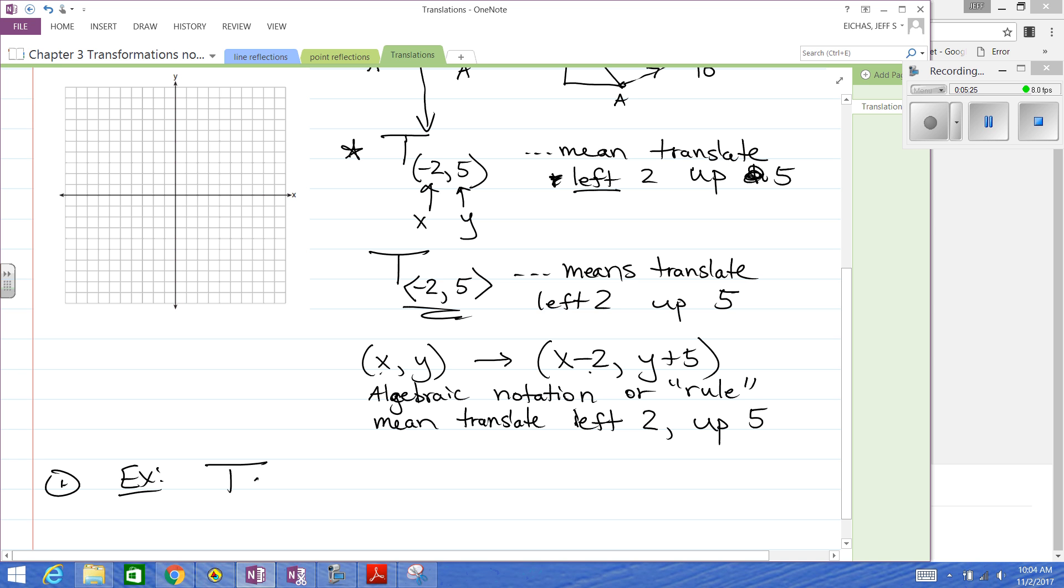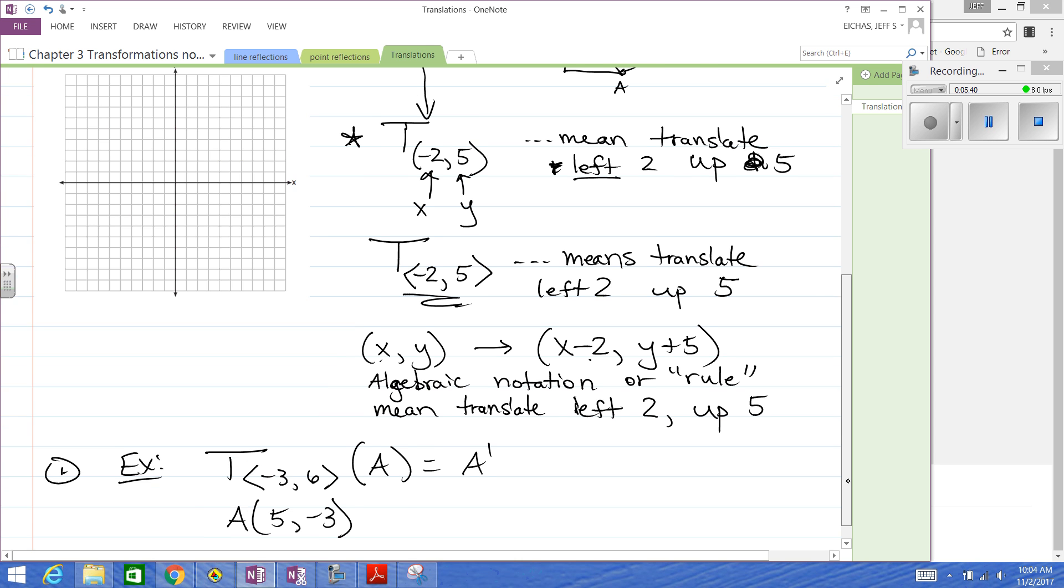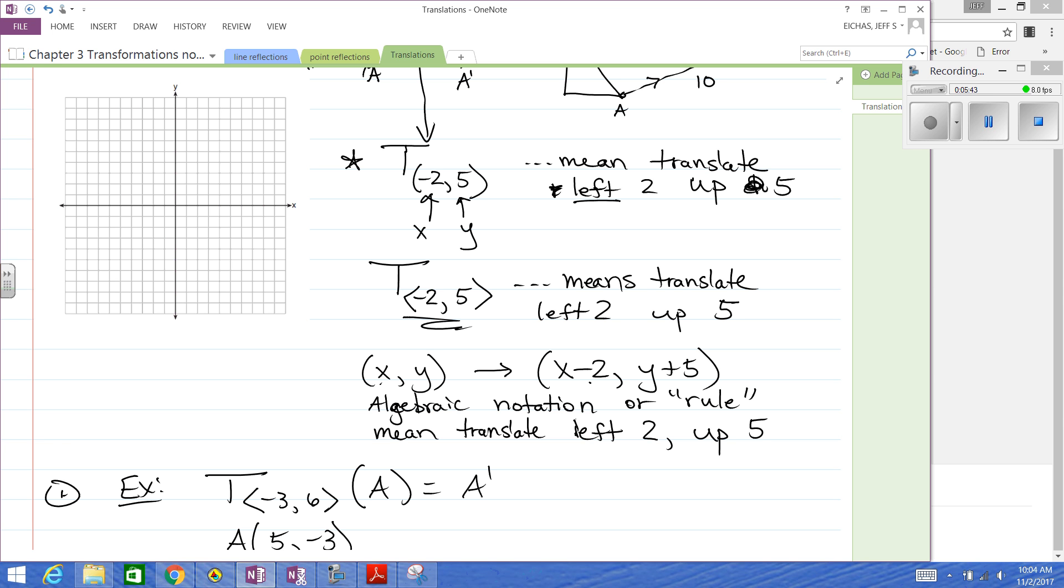So we'll just do a couple examples here. Okay, so we'll translate left 3 up 6 to point A. Now I'll give you the coordinates for A. A is going to be 5, negative 3. So we can go ahead and algebraically do it or let's graph it this time. So 5, negative 3. There's A. We're going to move it left 3 because we're subtracting 3 from the x value. So we're going to move it up 6. So that's A prime. So that is the direction that it moved.